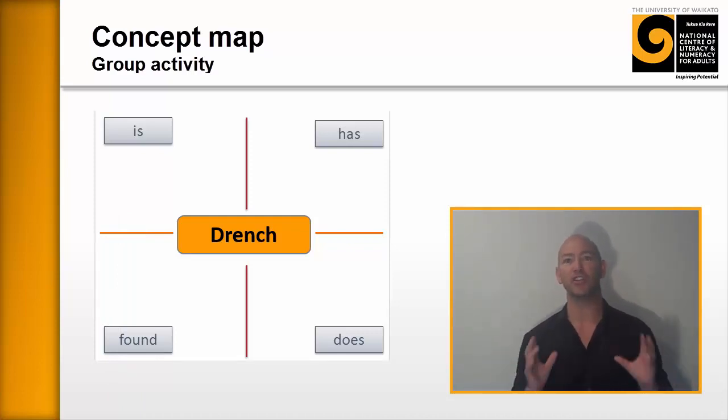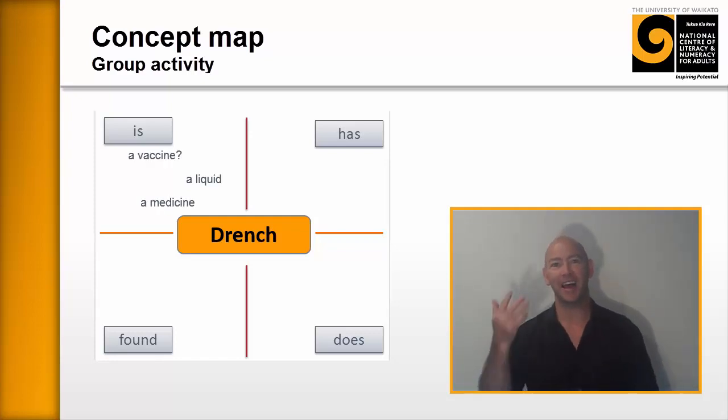So learners will rip into this pretty quickly and you want them to begin generating words and groups very quickly. So drench is a liquid, a medicine. I'm not sure is it a vaccine and so on. And they'll be writing these in there as much as they can. It doesn't actually matter at this point whether they're terribly correct or not, because we're going to look at that soon and fix that.